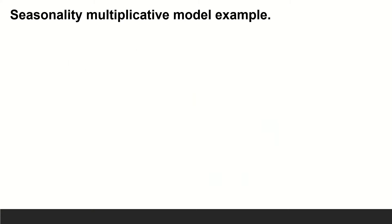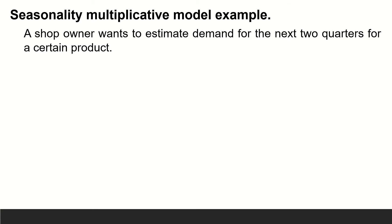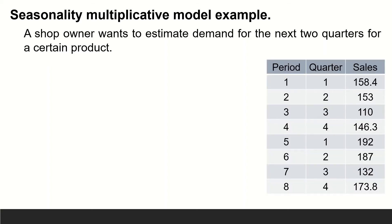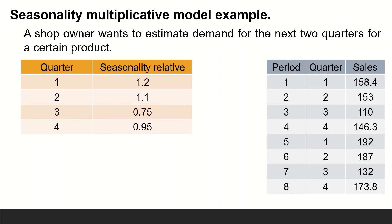Example for the seasonality multiplicative model: A shop owner wants to estimate demand for the next two quarters for a certain product. Sales data shown in this table consists of trend and seasonality. Known that quarter relatives are 1.2 for the first quarter, 1.1 for the second quarter, 0.75 for the third quarter, and 0.95 for the fourth quarter.